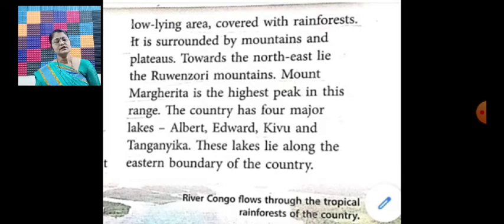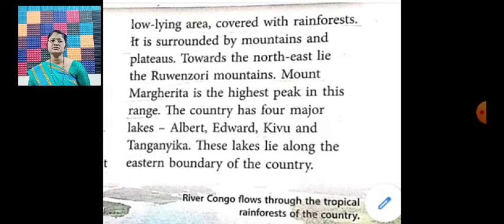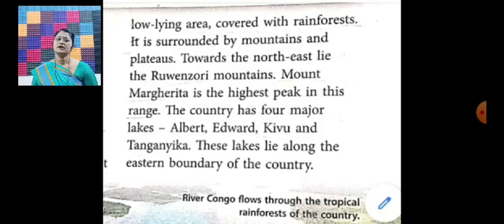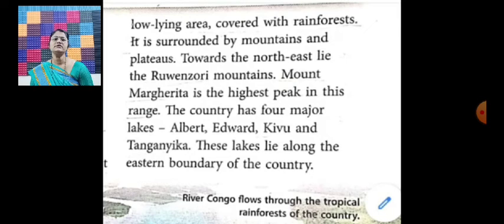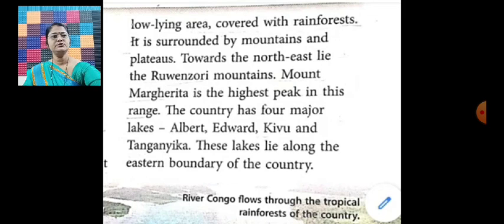The country lies in the center of the river basin, which is a vast low-lying area covered with rain forest. It is surrounded by mountains and plateaus. The four major lakes — Albert, Edward, Kivu, and Tanganyika — lie along the eastern boundary of the country. That is enough for this video; meet you in the next video. Good day.